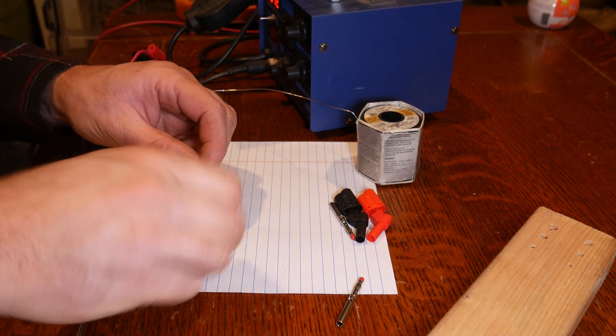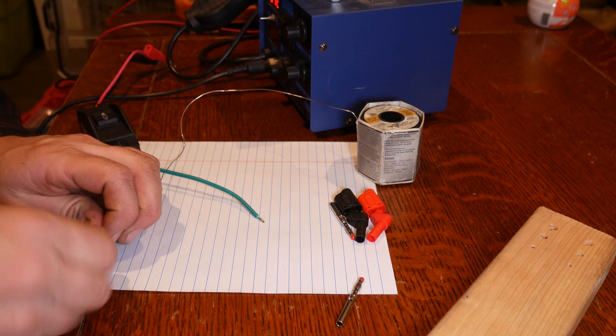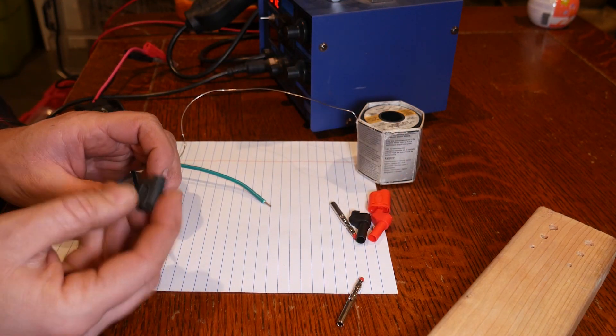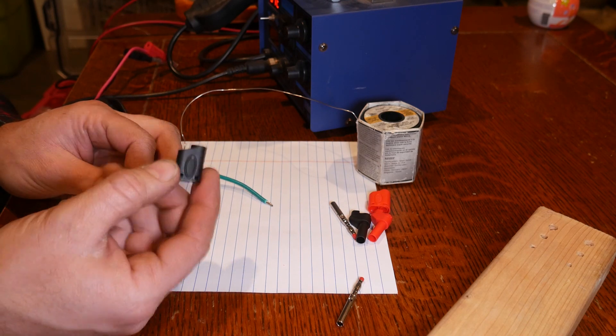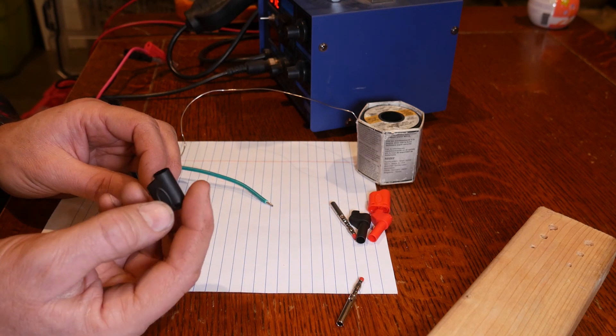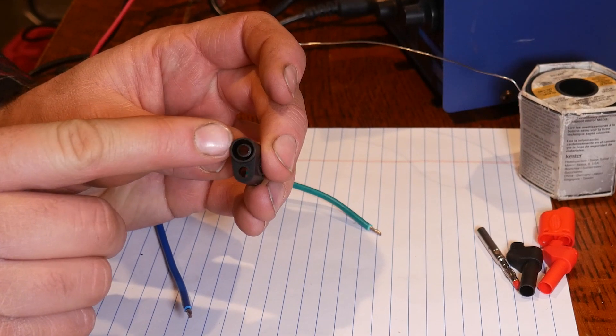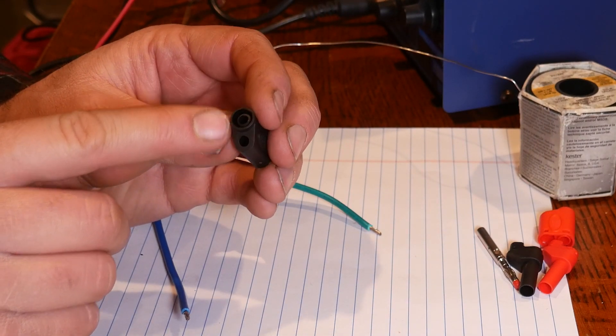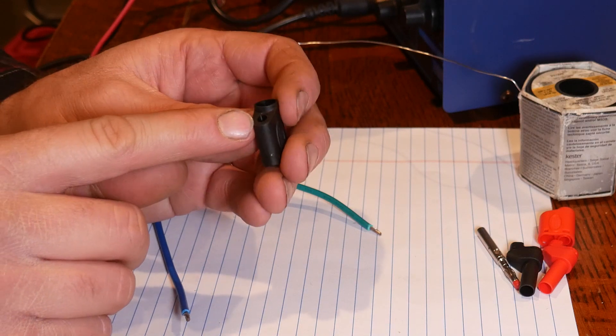Now for this side, now working on this side, I believe on the last one we did I did black and blue as the same color, so we're going to do the same thing. We have to preload this little plastic guy on the line first.